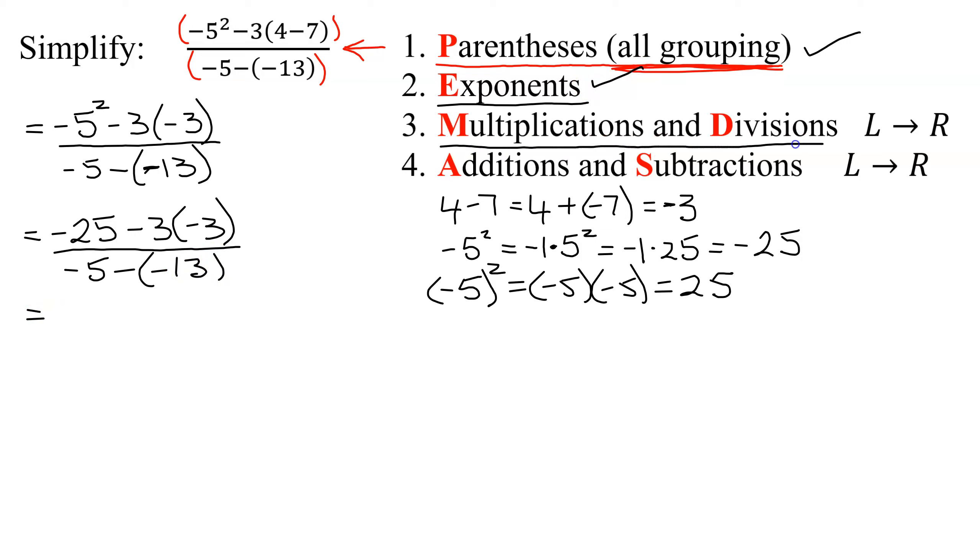Now I need to work on multiplication and divisions, working from left to right. So in the numerator, I have a multiplication here. So I'm going to have negative 25. And then I have a negative 3 times a negative 3. So a negative times a negative is a positive, and 3 times 3 is 9.